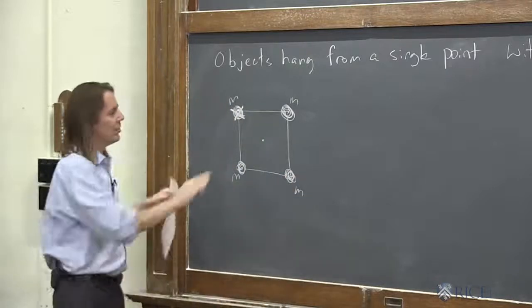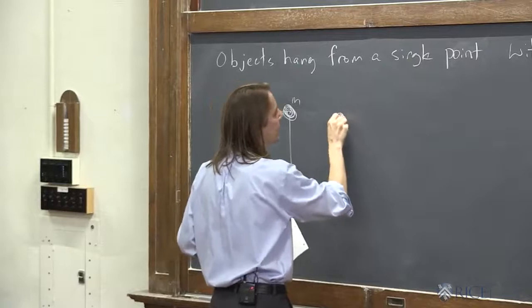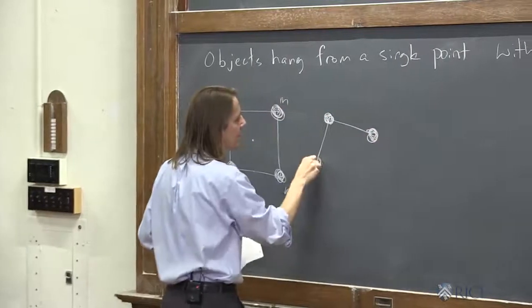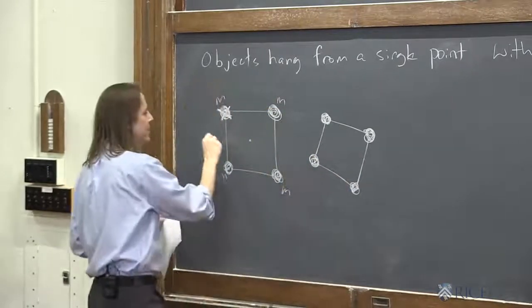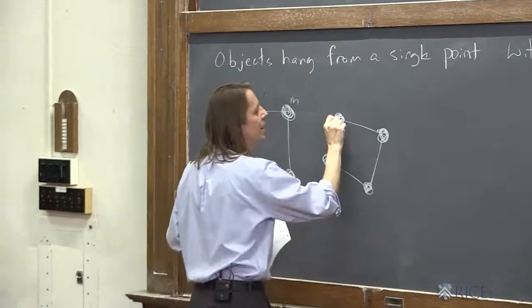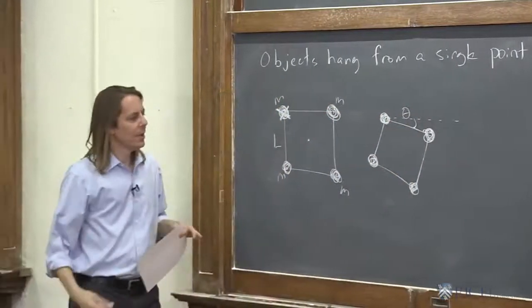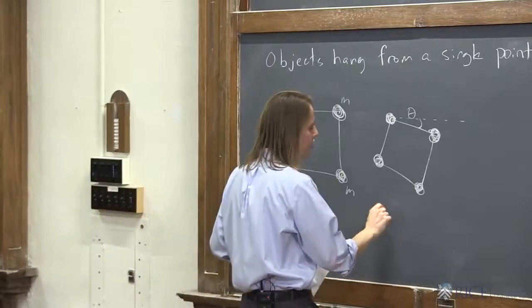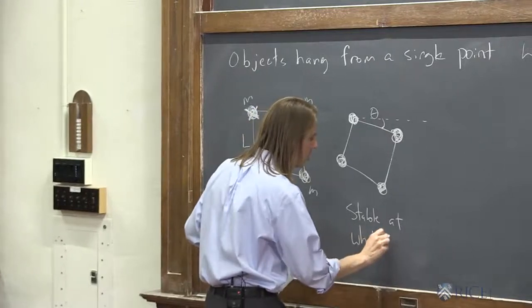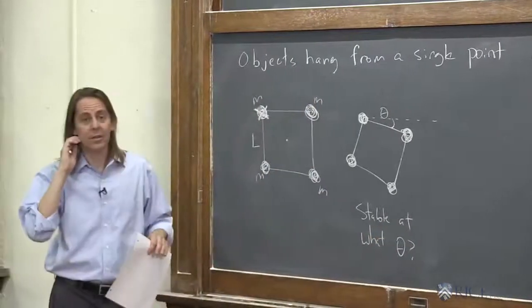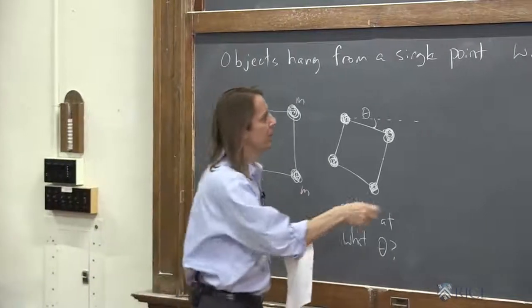So to approach it mathematically, we're going to say it could be at some angle. So let's draw it at some angle. So here we go like that. Could be like this. Where these are all mass m, a side length l. And now we say, oh, it's rotated to an angle theta. And the question is, it's stable at what theta? Or it's static at what theta? So here we go.